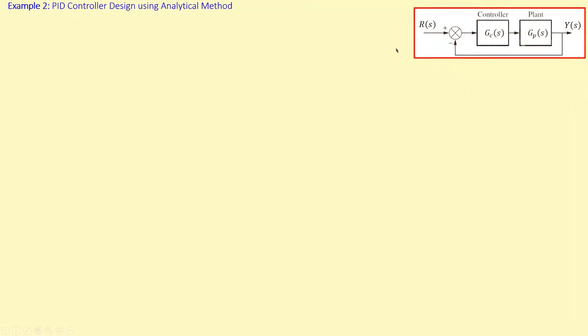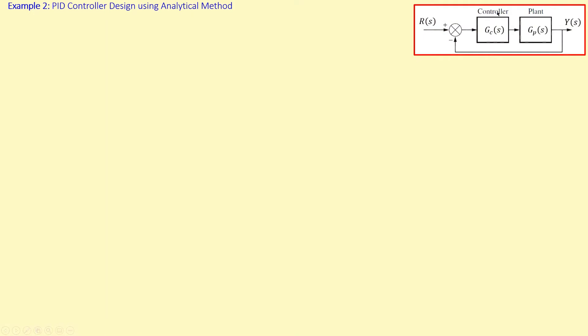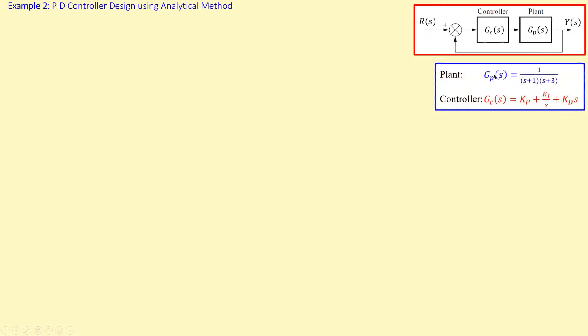So the PID controller design using analytical methods. The system consists of the controller and the plant in cascade with a unity gain feedback configuration. The plant is a second order system with two real, stable poles. The controller is given by the PID expression with parameters KP, KI, and KD in the Laplace domain.